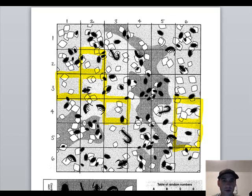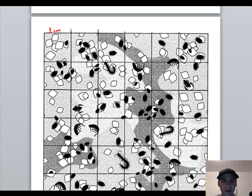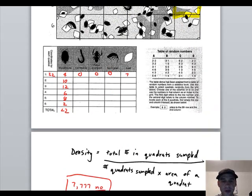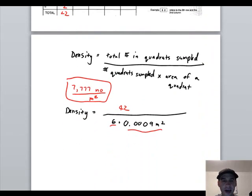We want to use this to determine how we would sample a living population, and using quadrats is one method. Once you've done this homework, hopefully you've figured out how to calculate the density of organisms in quadrats and use that as a representative sample.